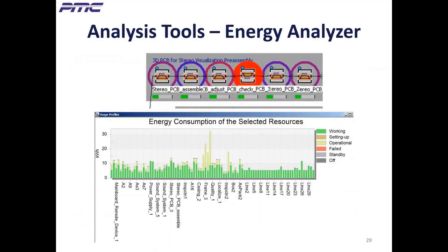PlantSim also has a unique, powerful energy analyzer tool and reports that let you evaluate and optimize energy use. For example, a section of a model with six workstations uses color-coded circles to indicate energy usage — red the highest, purple in between, and blue the least. This makes it easy to pinpoint areas to focus improvement on. The chart below shows the details of energy consumption.